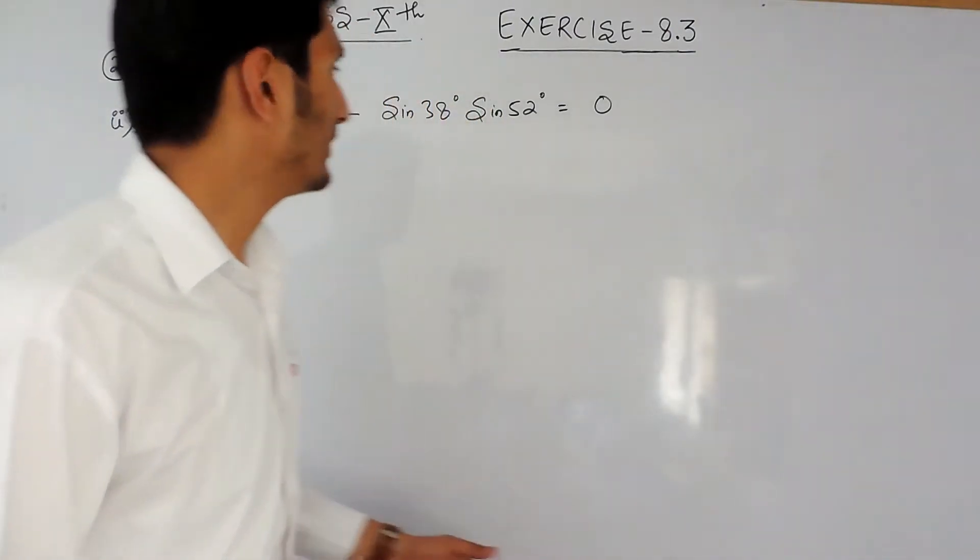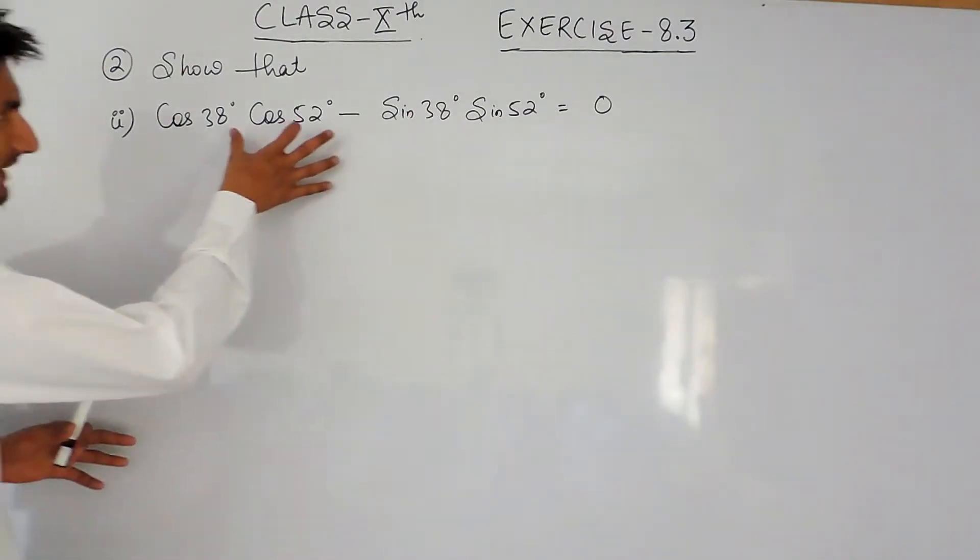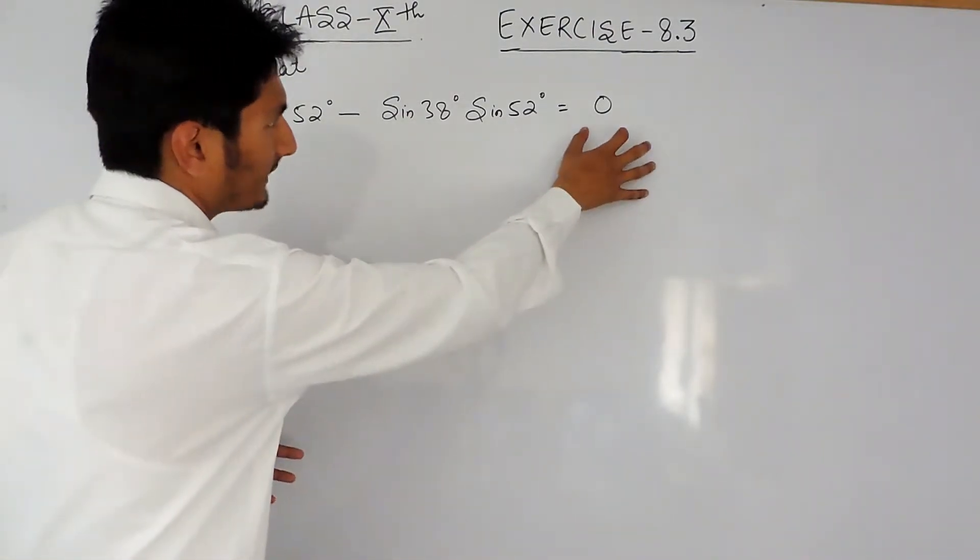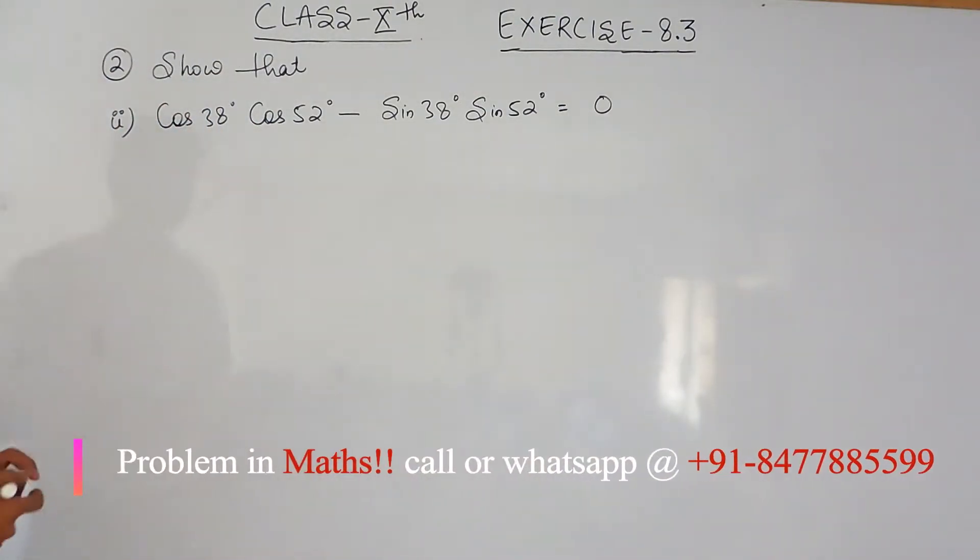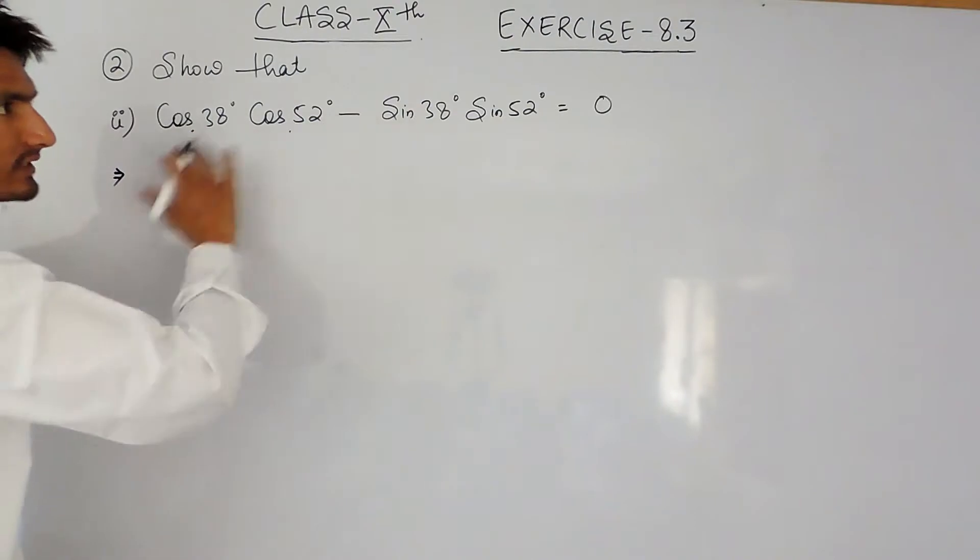Hello everyone, in this video we are going to solve the second part of question number two. Here again you have to show that the left hand side equals the right hand side. To solve this, let's convert these terms into their complementary counterparts. Now one thing is important: you have to convert only two values out of these four.